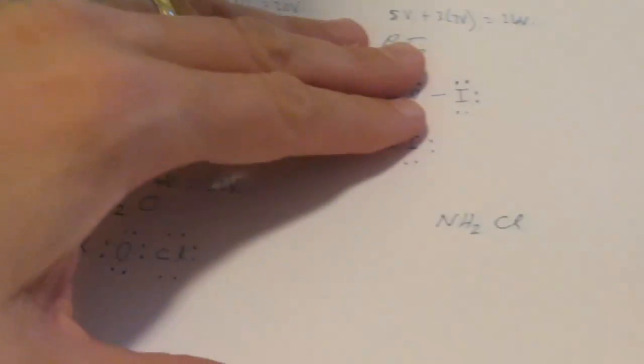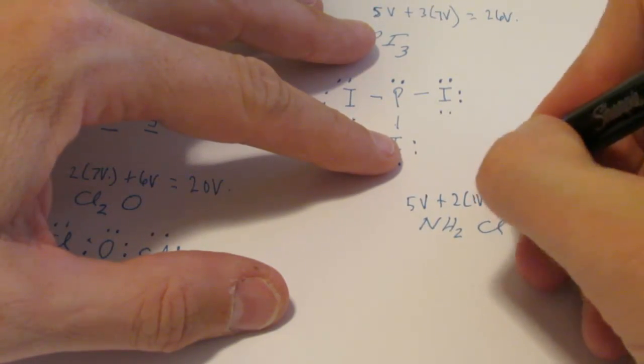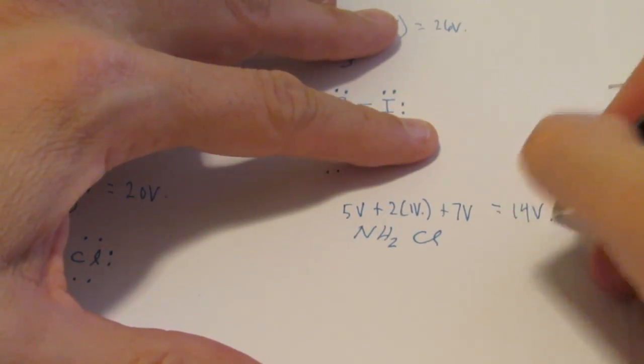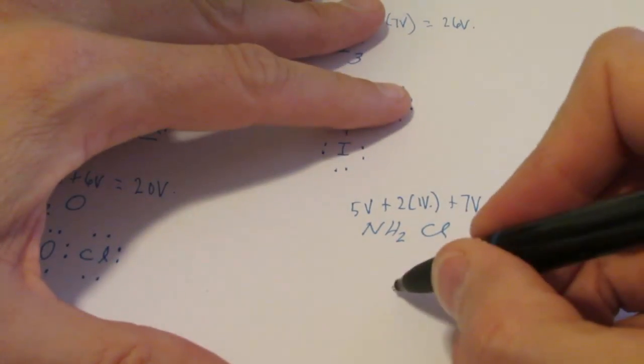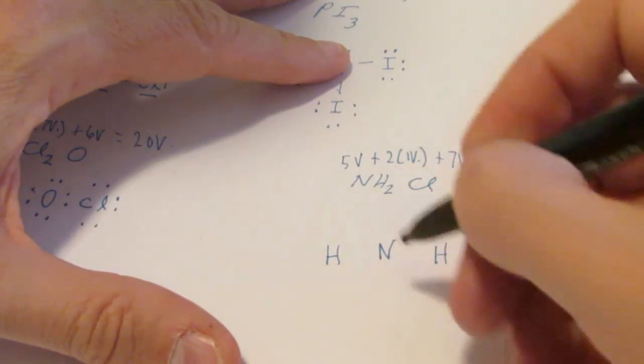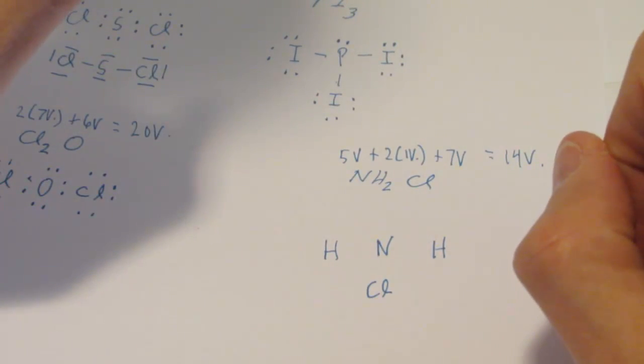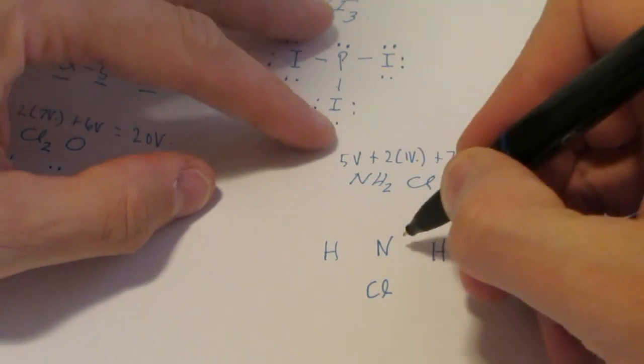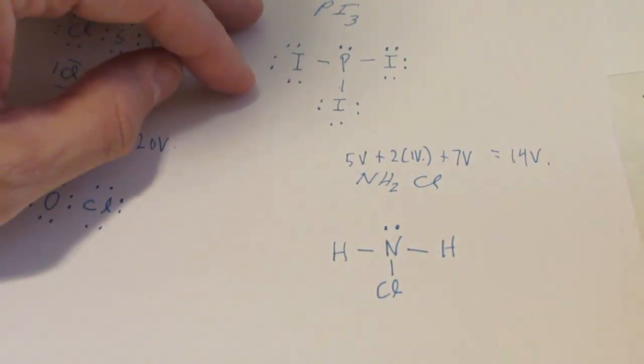What about NH2Cl? Nitrogen has five valence, it's in group fifteen. Each hydrogen has one valence. And chlorine has seven valence. So we have fourteen valence altogether. Let me go with nitrogen in the middle. We'll put an H on one side, an H on the other side, and let's stick the chlorine down below. It turns out that nitrogen is in the center of this particular molecule. Put a pair between nitrogen and hydrogens, and then nitrogen and chlorine. Put a pair above nitrogen, and then I'm going to put three more pair around chlorine.